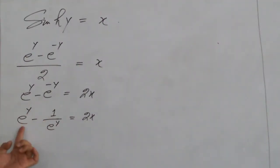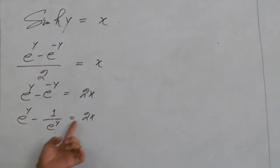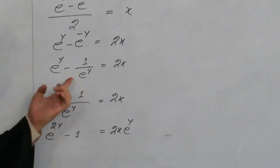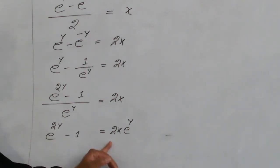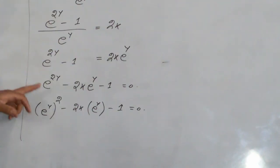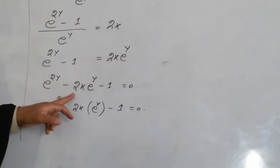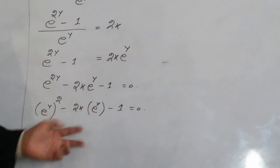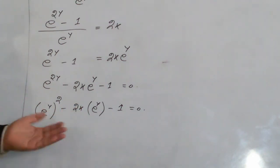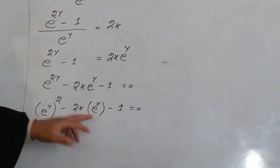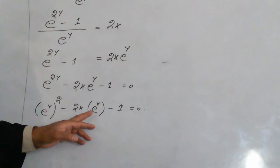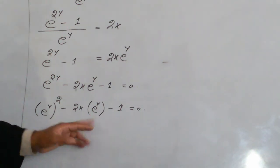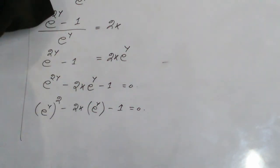Rearranging further, we have e raised to the power y minus 1 divided by e raised to the power y, equal to 2x. After rearrangement, we obtain e raised to the power y minus 2x times e raised to the power y minus 1 equals zero. To find the value of e raised to the power y, we solve this as a quadratic equation using the quadratic formula.